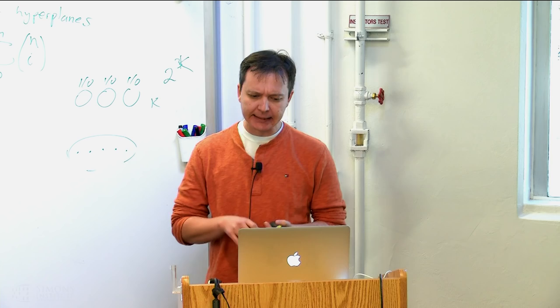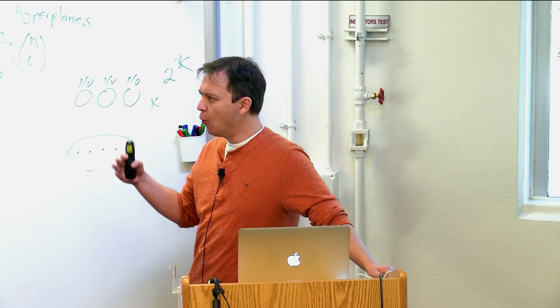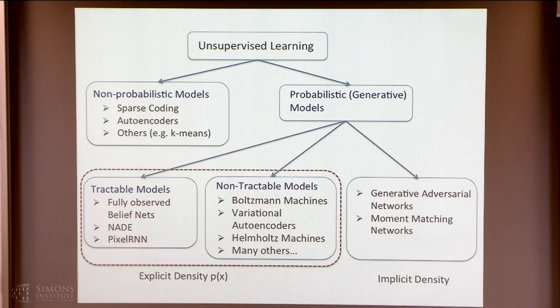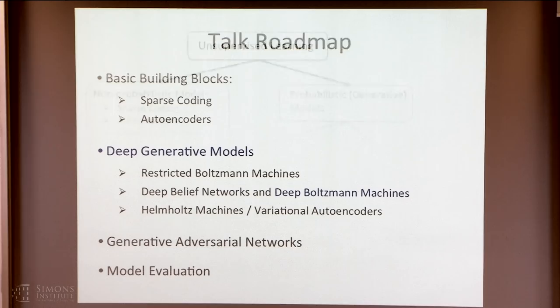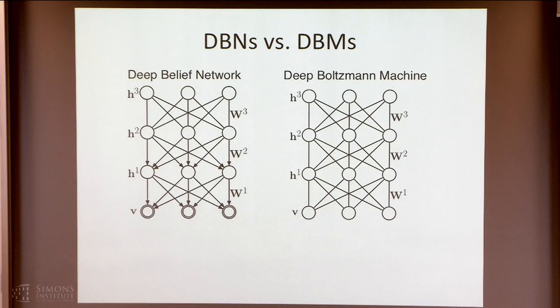So in the first couple of lectures, you've heard about supervised learning and we've looked a little bit at restricted Boltzmann machines and deep belief networks. We looked at justification for training these models one layer at a time, and there are very nice mathematical underpinnings behind these models. Let me talk about the other class of models, called Boltzmann machines or deep Boltzmann machines. It's very similar in flavor to deep belief networks, but has a different architecture and a different learning algorithm.